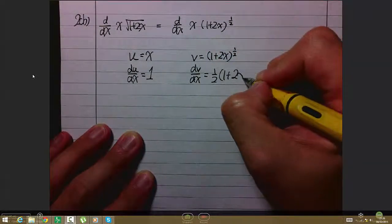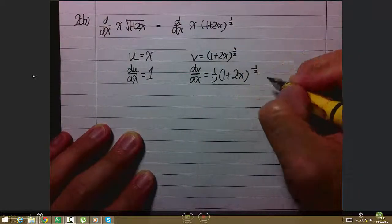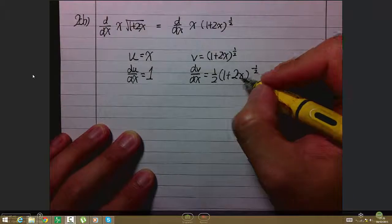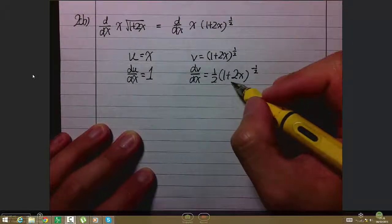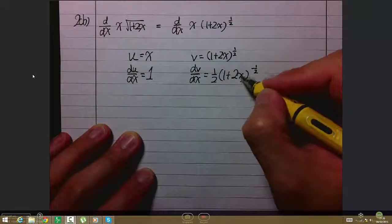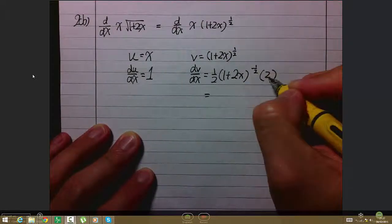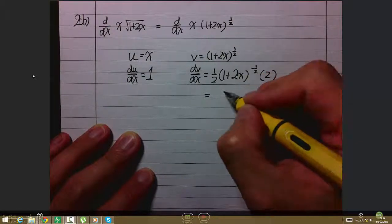Differentiating v with respect to x gives (1/2)(1+2x)^(-1/2). Then by the chain rule, you have to differentiate what's inside the bracket as well. When 1 is differentiated it becomes 0, 2x gives 2. Then if I simplify, 2 times 1/2 gives 1.